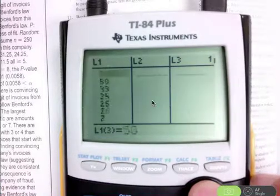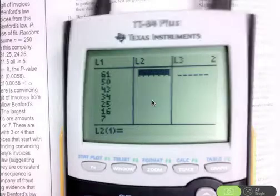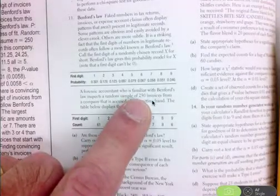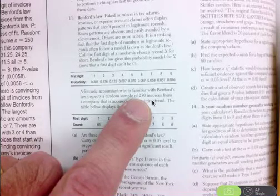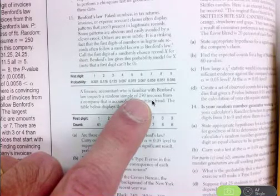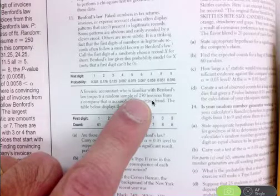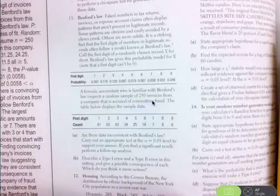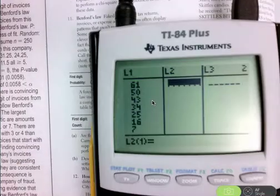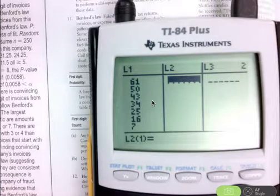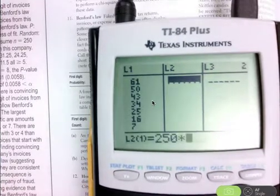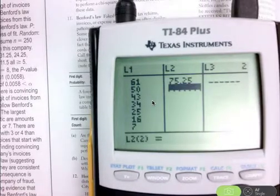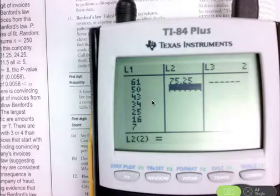It doesn't matter whether you are using the calculator program or the chi-squared goodness of fit command. You want to put the observed counts into list 1. The expected counts we need to put into list 2. I know that the sample size is 250. If the null hypothesis is true, the expected count of invoices that would have a first digit of 1 is 30.1% of 250.